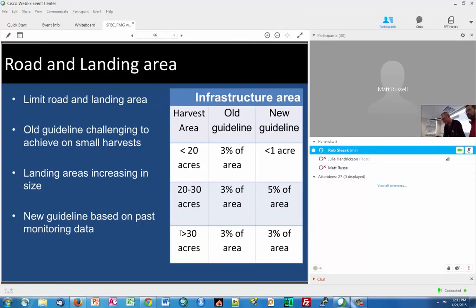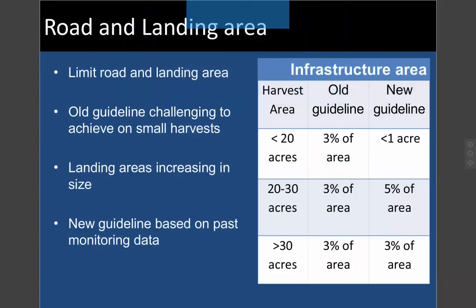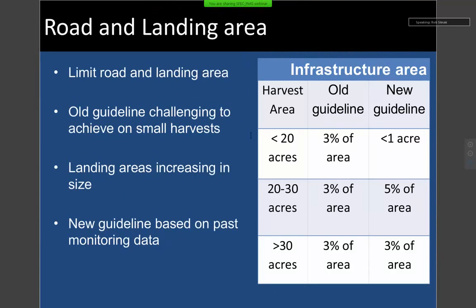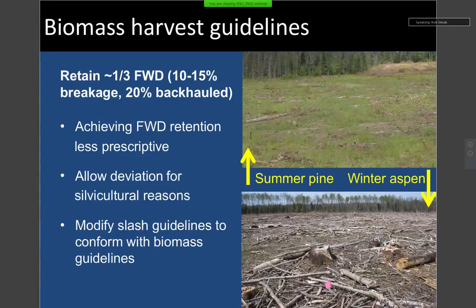While we sort out some technical difficulties — I want to point out that we still absolutely recommend limiting the amount of road and landing area. It's huge. We've been assessing some landings for over 15 years and there's almost not a speck of vegetation growing on a lot of them — the impacts persist for quite a bit of time. No matter what the guideline is, always try to limit the absolute amount of road and landing area at your harvest site.